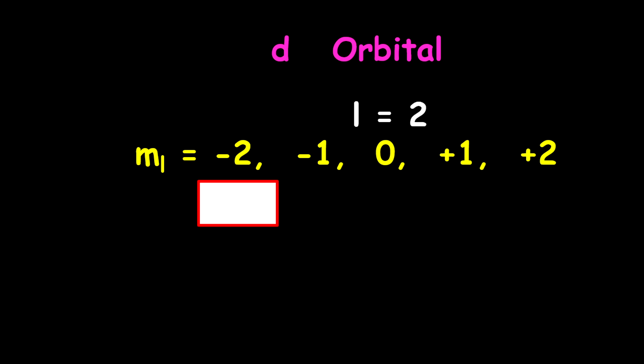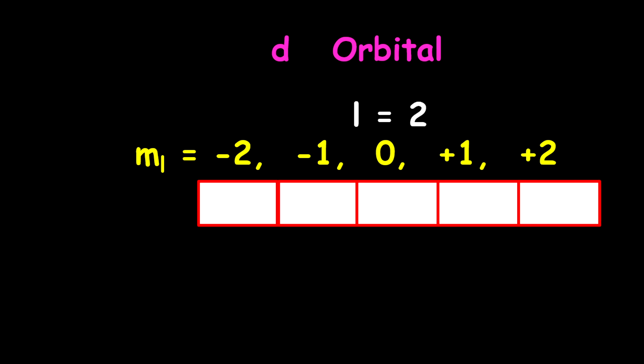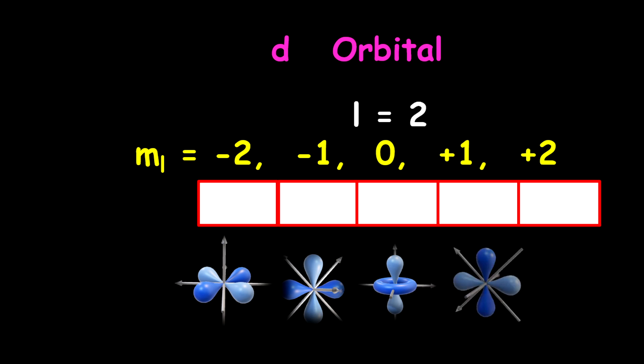For the d orbital, we have our L value which is equal to 2, and therefore our ML values will be minus 2, minus 1, 0, positive 1, and positive 2. This is indicating that there are five specific orbitals. The five orbitals will bring you specific shapes, patterns, and orientations.